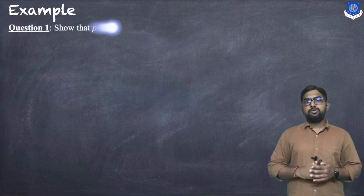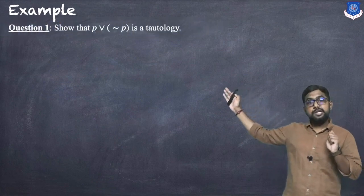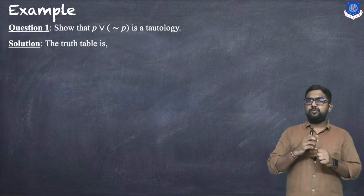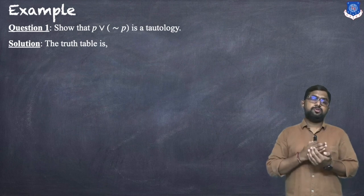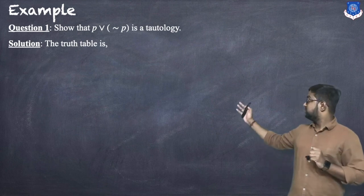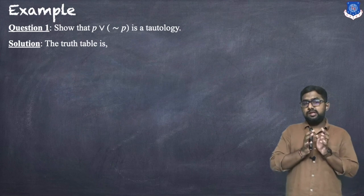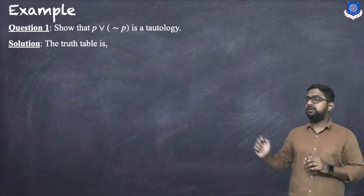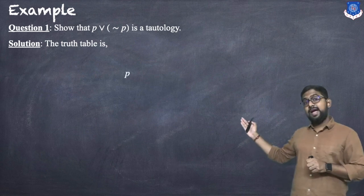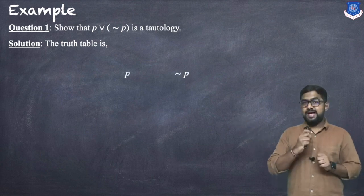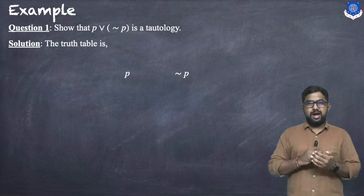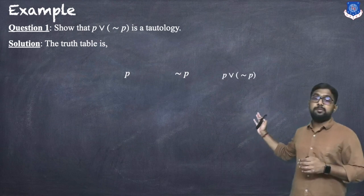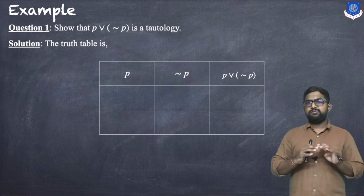Let us discuss examples. The first question is: show that p∨¬p is a tautology. To check whether it is a tautology or not, we need to create a truth table. In the given proposition we have only one statement p, so there will be only two possibilities — either true or false — and the last column will be the final statement p∨¬p.